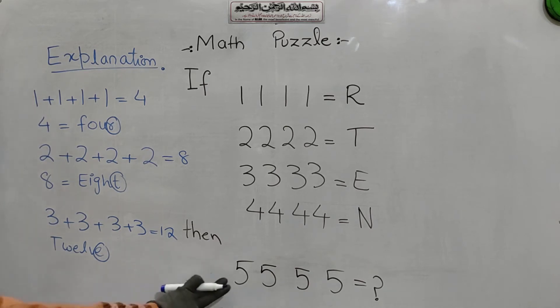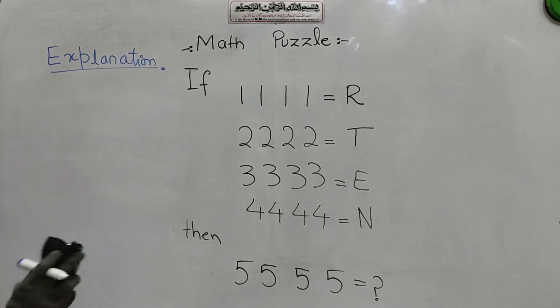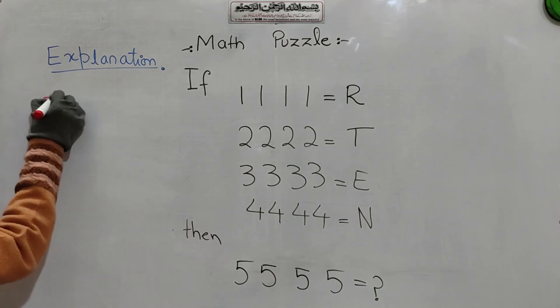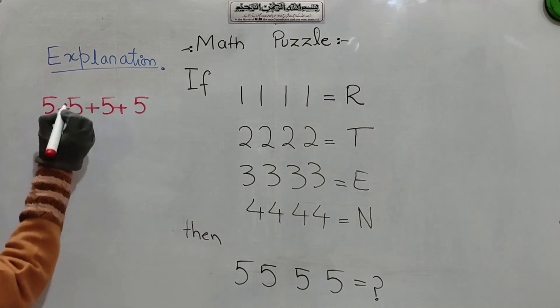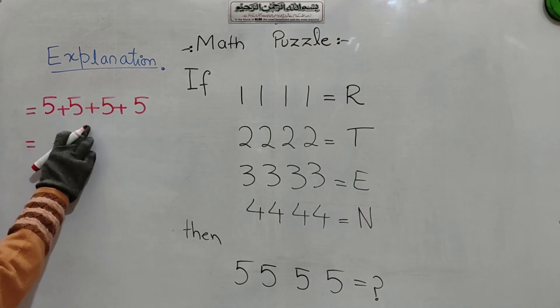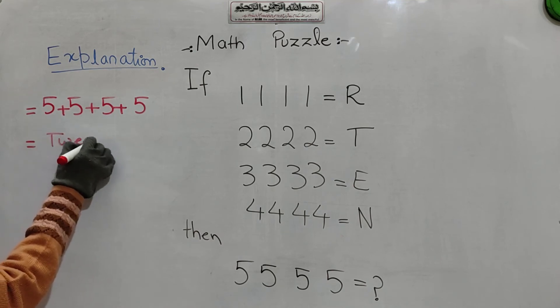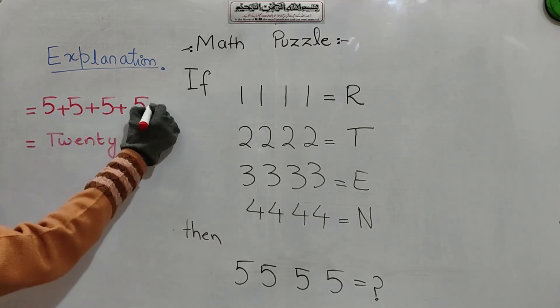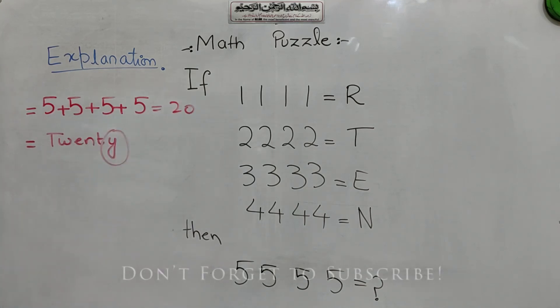So let's find out our answer of 5, 5, 5, 5 is equals to what? We rub all these things. And 5, 5, 5, 5 add all 5 then we get 5 plus 5, 10 plus 10, 20. So spelling of 20 is T, W, E, N, T, Y. So last letter is Y. So what will be our answer? Our answer is Y.